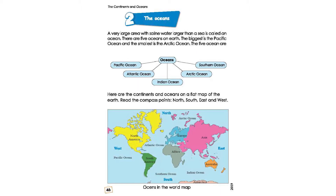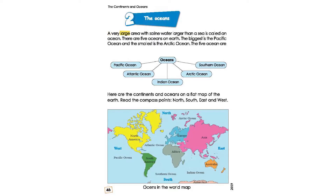Chapter 8, page 46. The Oceans — Mahasagur. A very large area with saline water, larger than a sea, is called an ocean.